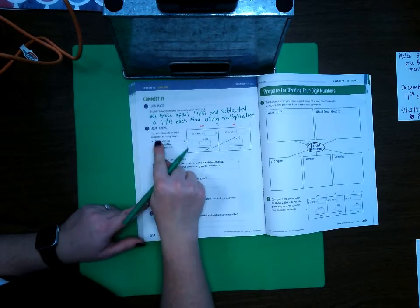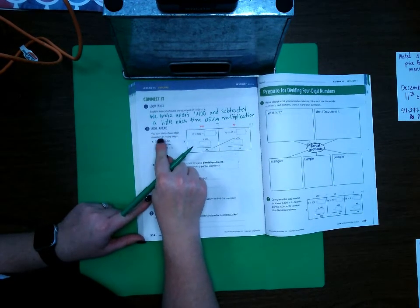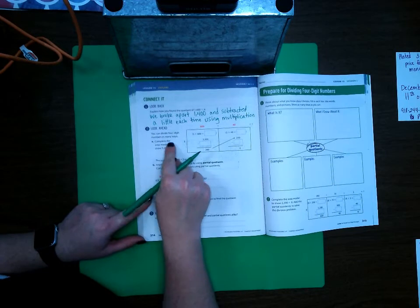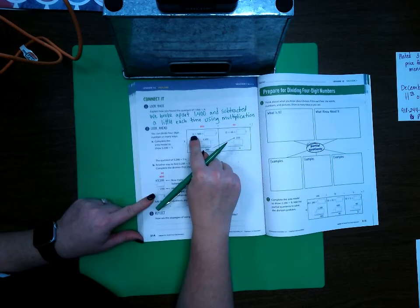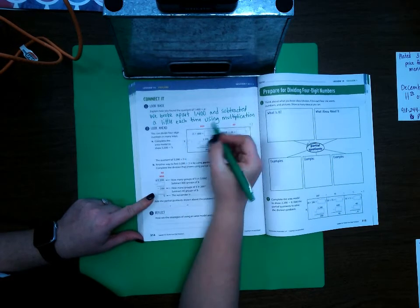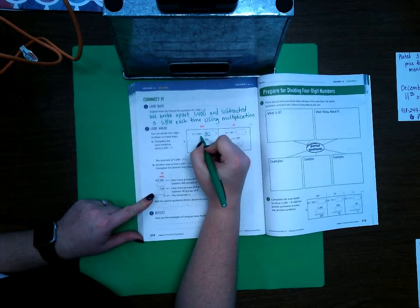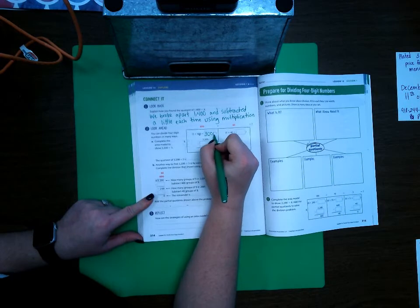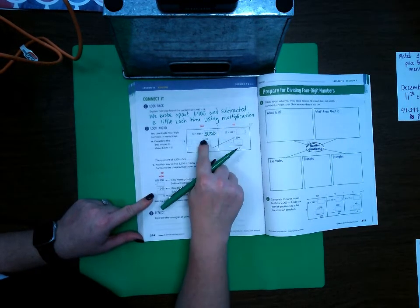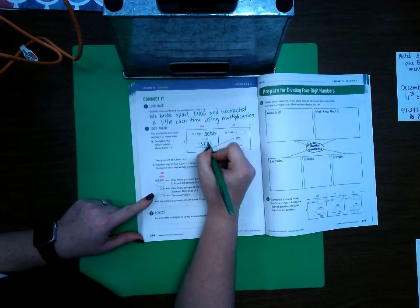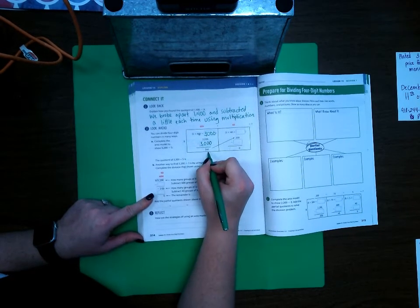Look ahead. You can divide four-digit numbers in many ways. Complete the area model to show 3200 divided by five. Well, as we can see here, five times six is 30. And we've got to add our two zeros. So, five times 600 is 3000. So, 3200 minus 3000 leaves 200.